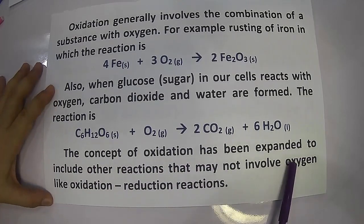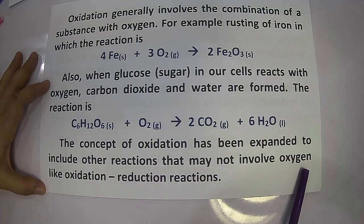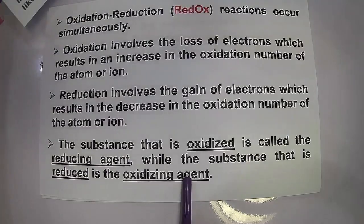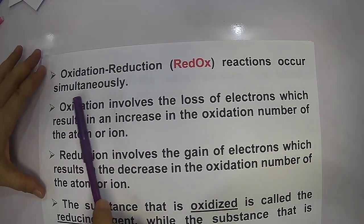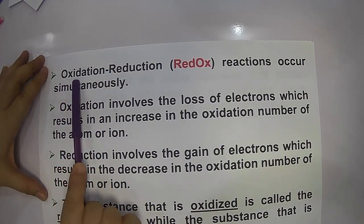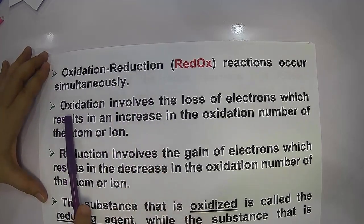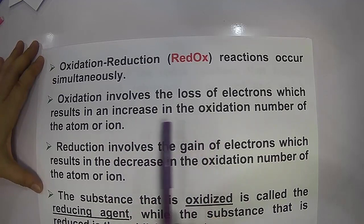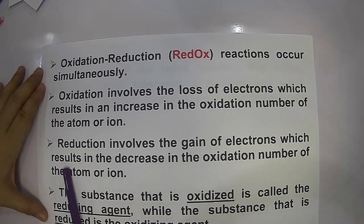The concept of oxidation has been expanded to include reactions that may not involve oxygen. Oxidation and reduction occur simultaneously — as one element undergoes oxidation, there must be an element undergoing reduction. Oxidation involves the loss of electron, resulting in an increase in oxidation number, whereas reduction involves the gain of electron, resulting in a decrease in oxidation number.